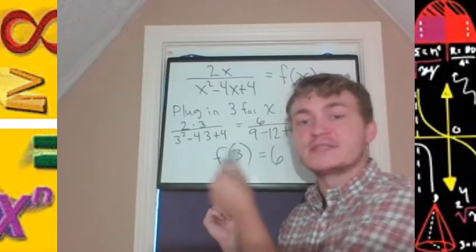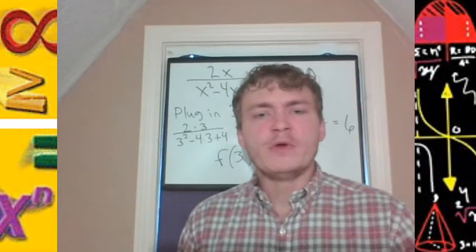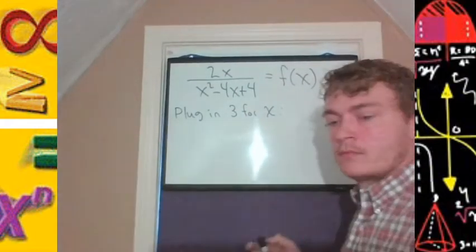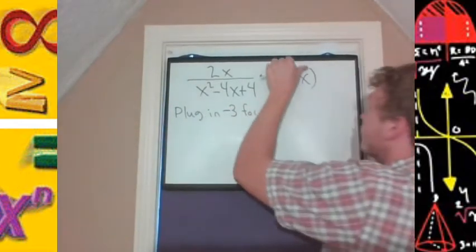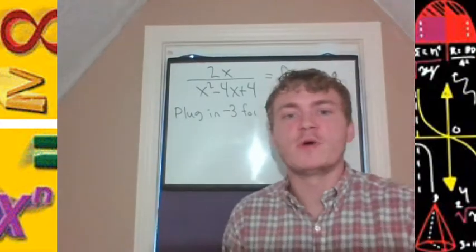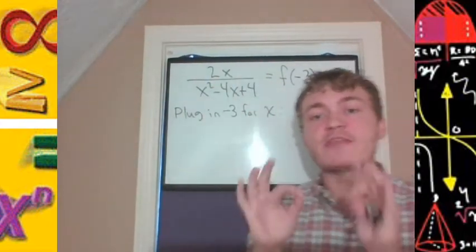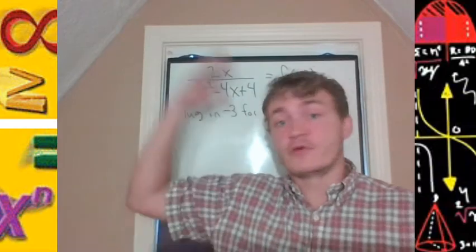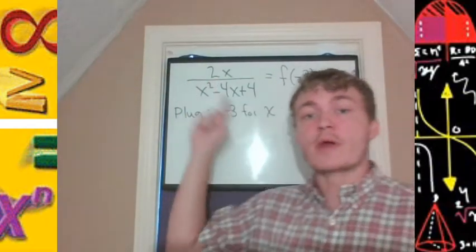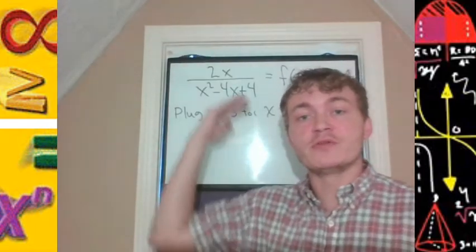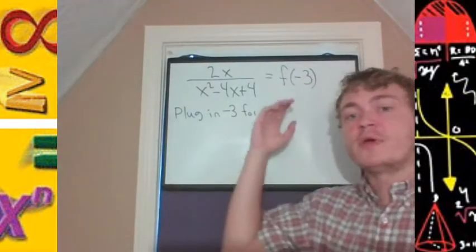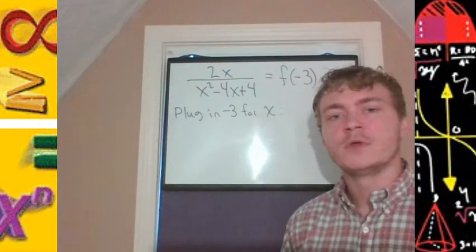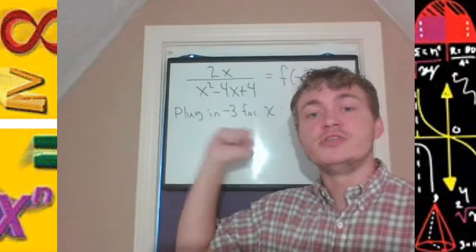What about when x is negative 3? For this rational function, we evaluate by plugging negative 3 in. A rational function is the quotient of two polynomials. What does this function equal when x is negative 3, i.e., what is f of negative 3? We determine this by plugging negative 3 into our function. In the numerator, 2 times x is 2 times negative 3.